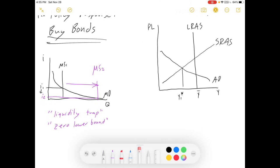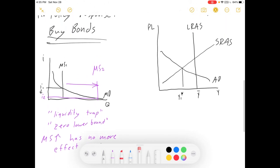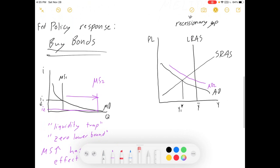The idea is this: because interest rates can't go negative, there's a limit to what monetary policy can do. Increasing the money supply won't have any further effect on I, because I has already bottomed out.